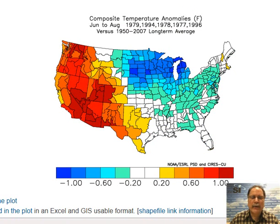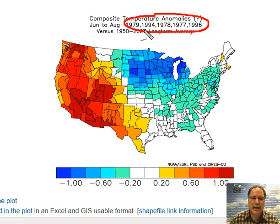One other interesting factor that could play a role in our summertime weather pattern here in the mid-Atlantic region has to do with the Great Lakes. We've heard about the unbelievable amount of ice on the Great Lakes throughout the winter and even now. Looking at analog years with above-normal ice cover on the Great Lakes well into the spring season — such as 1978-79, 1993-94, 1977-78, 1976-77, and 1995-96 — all these years had a lot of ice above normal well into the spring season, similar to this year.